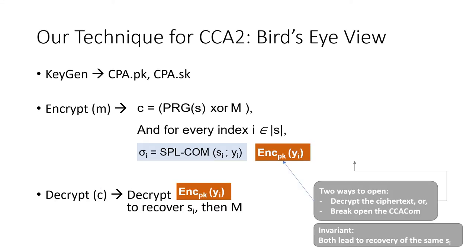Now let me discuss our technique for achieving CCA2 security. The overall template is very similar to the CCA1 setting with one important difference: instead of using a statistically binding commitment for the alternative decryption mechanism, we use a CCA secure commitment. As before, we ensure two ways to open any ciphertext the adversary sends to the decryption oracle — either decrypt using the CPA secret key (open the orange box), or open the blue box by breaking open the CCA secure commitment — and we maintain the same invariant that both lead to recovery of the same seed si.